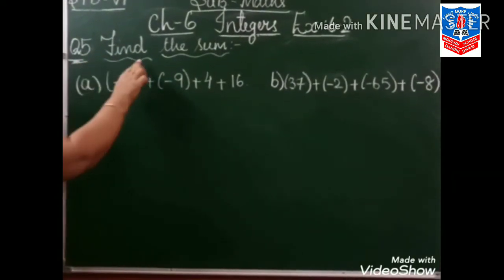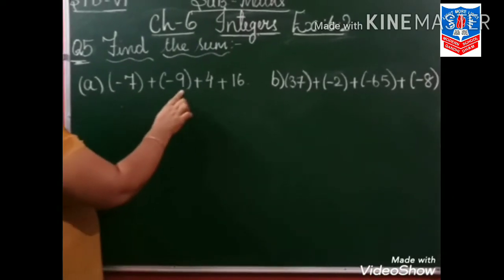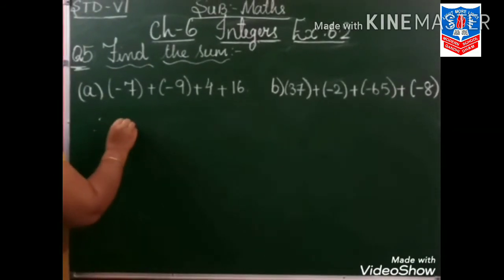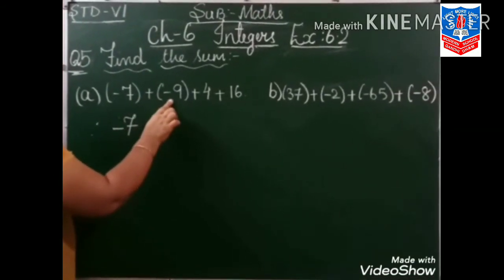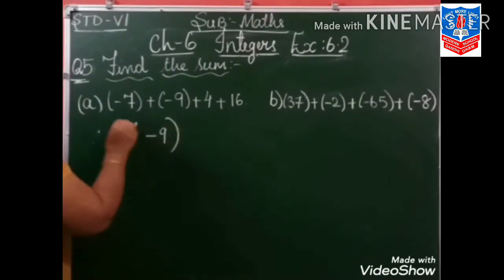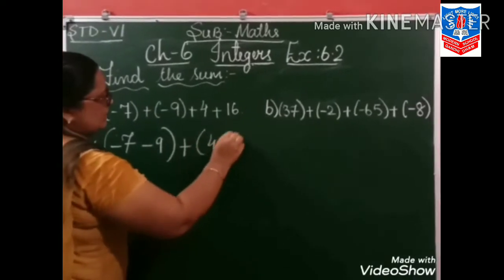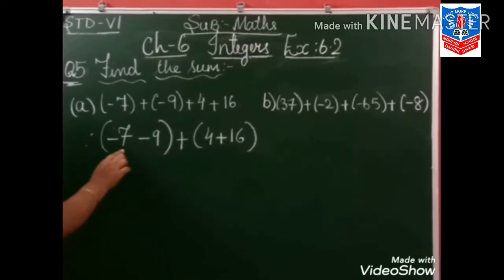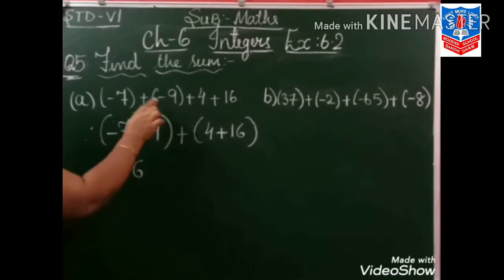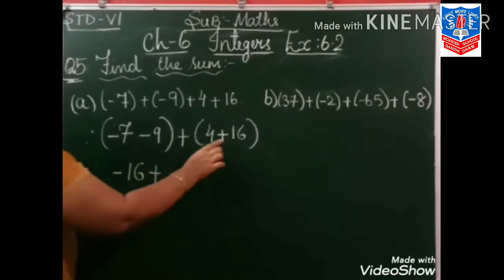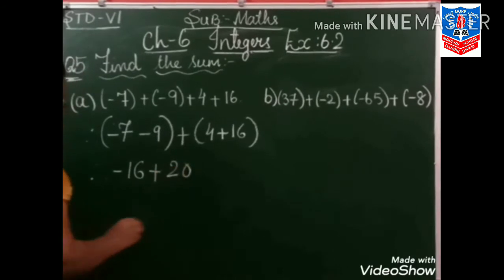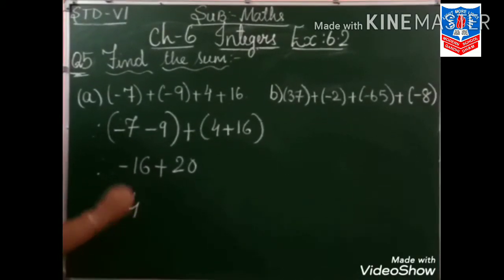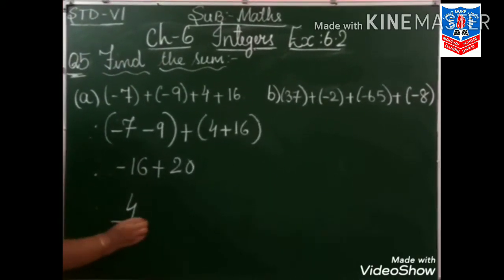Question number 5: find the sum of minus 7 plus minus 9 plus 4 plus 16. Minus minus plus — 7 plus 9 is 16, and the greater sign is minus. Plus 4 plus 16 is 20. Therefore, minus plus minus — 20 minus 16 is 4, and the greater sign is plus. So our answer is 4.